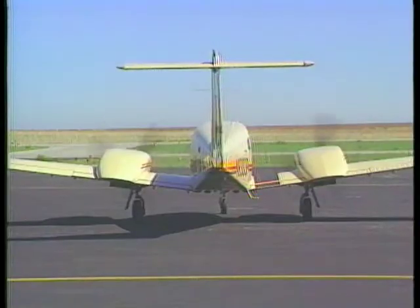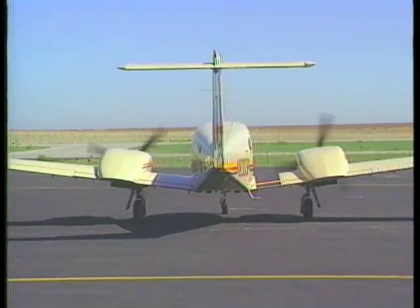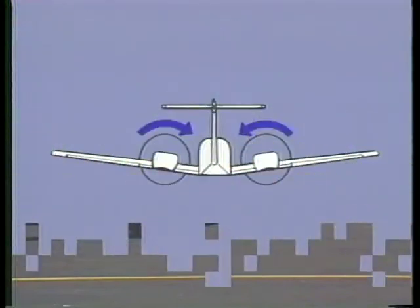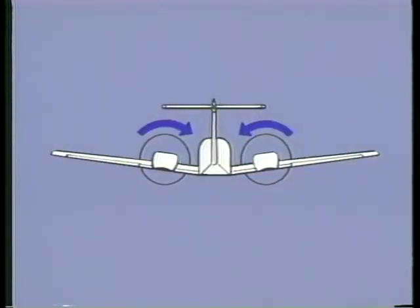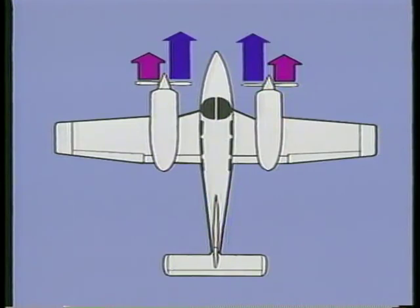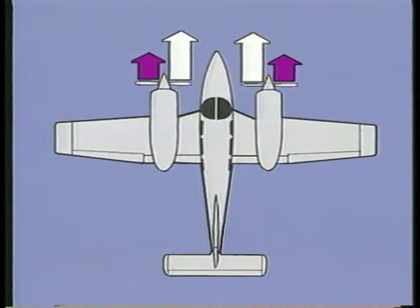This is the reason that the left engine is called the critical engine. Some twins have what are called counter-rotating propellers, where the right engine rotates in the opposite direction of the left. In this case, the airplane has no rolling tendency since the torque of each propeller cancels out the other. Also, there is no tendency to yaw to the left — p-factor is eliminated by placing the descending blade of each engine closest to the fuselage. In this case, neither engine is considered critical.